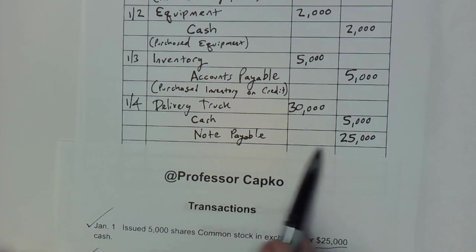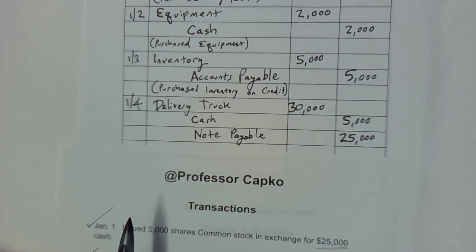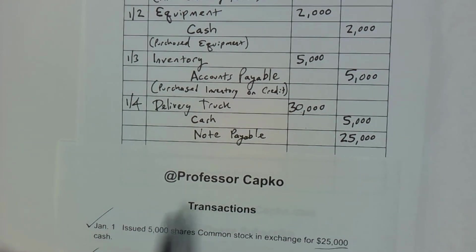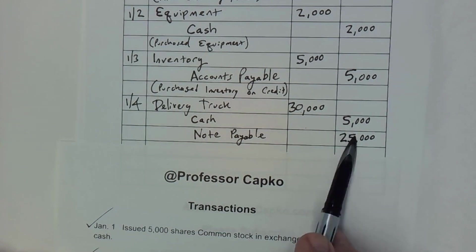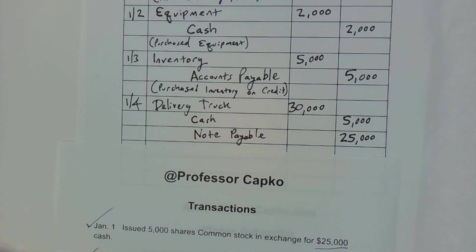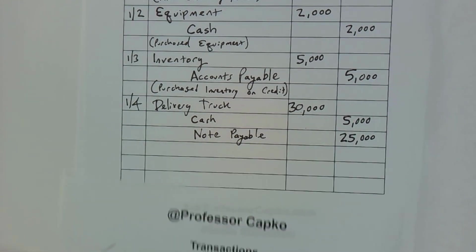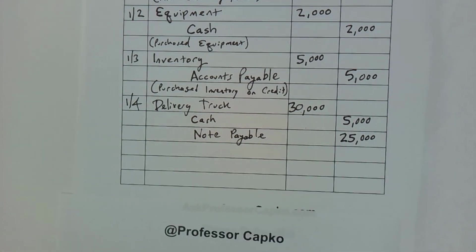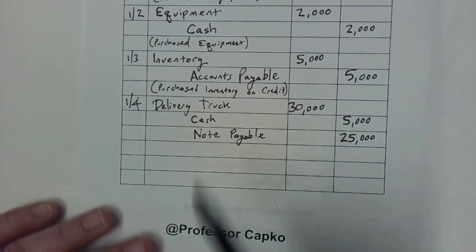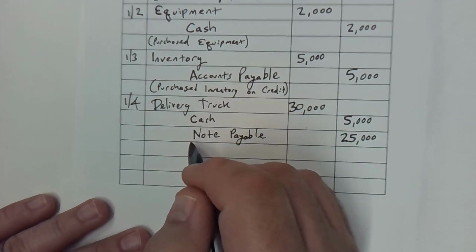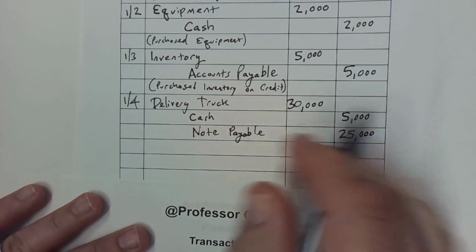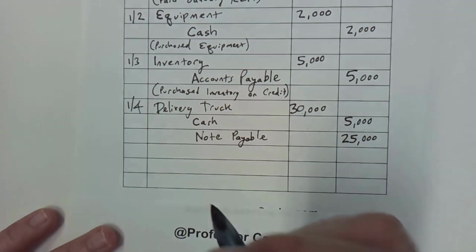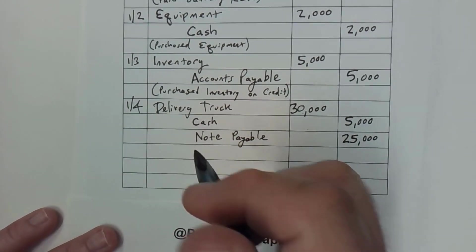So now we have $30,000 in debits and we have $30,000 worth of credits. So we have that. And I'm running out of space here, but we'll be okay.